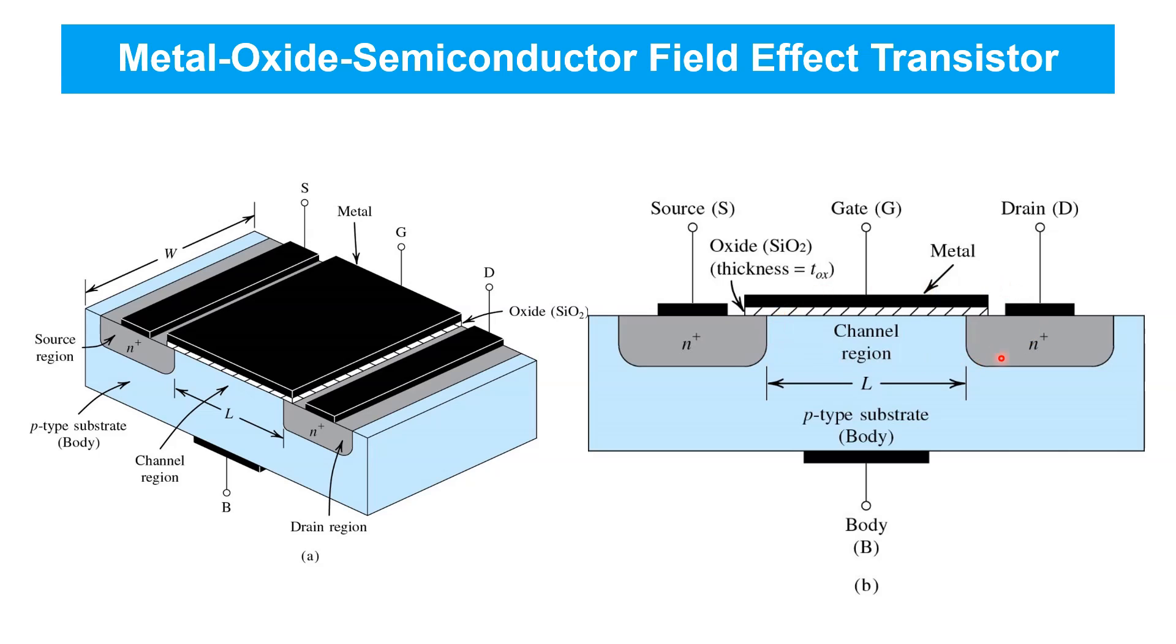The key channel region indicated here is composed of a stack of metal, an insulator, which is generally silicon dioxide for silicon MOSFETs, and semiconductor, in this case silicon.